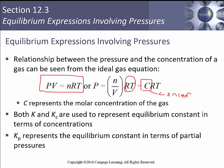Both K and KC are used to represent equilibrium constant in terms of concentrations. KP represents the equilibrium constant in terms of partial pressures. So there's a little bit of a transition that we've got to do to go between these KCs, or concentrations in moles per liter, and using pressures.